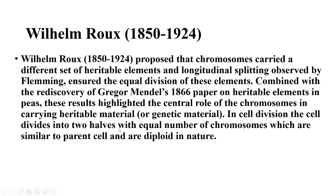In cell division, the cell divides into two halves with equal numbers of chromosomes, which are similar to the parent cell and are diploid in nature. All body cells and flowering plant cells are in a diploid state — each cell has two sets of chromosomes. When a diploid cell divides, the chromosome number is doubled before cell division, and then the doubled chromosomes are equally shared into two daughter cells. That is how the diploid state continues to future cells.